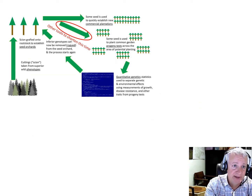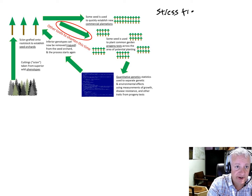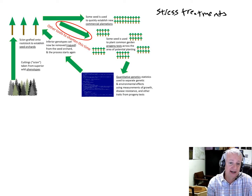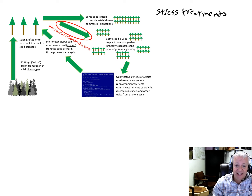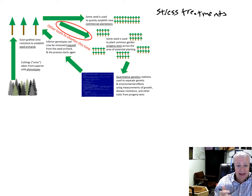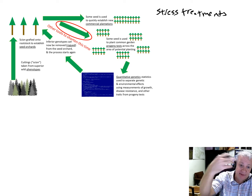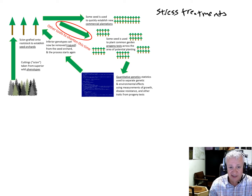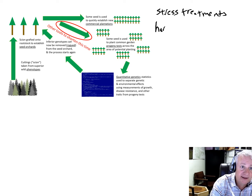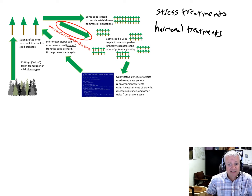Some of the tools that have been used are stress treatments. People have established seed orchards in pots — the root stock in pots with scion grafted on — and then stressed those plants. They might drought stress them or root prune them. Stress can speed up the formation of flowers and fruits, as an evolutionary adaptation where, under stress, trees will sometimes prematurely produce fruits to increase the probability of reproduction. Hormonal treatments of material in seed orchards have also been tried to speed up seed production.